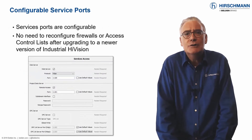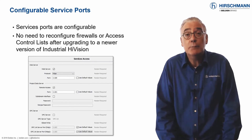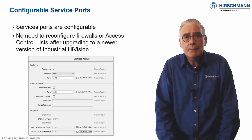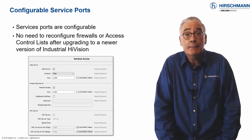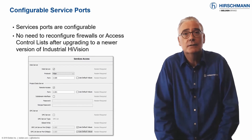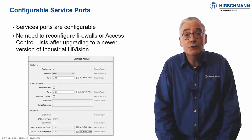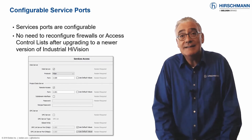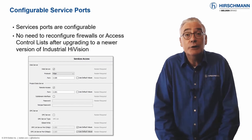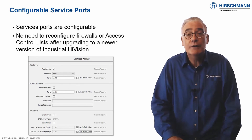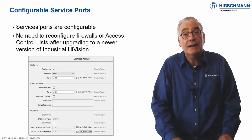Industrial HiVision uses a client-server architecture where the clients can be installed remotely. To enable communication, it's necessary to define TCP/IP ports per service. By default, each version of Industrial HiVision uses different ports. This has a big advantage: if you are considering upgrading to a newer version, you can install the new version on the same hardware which is running the current version.